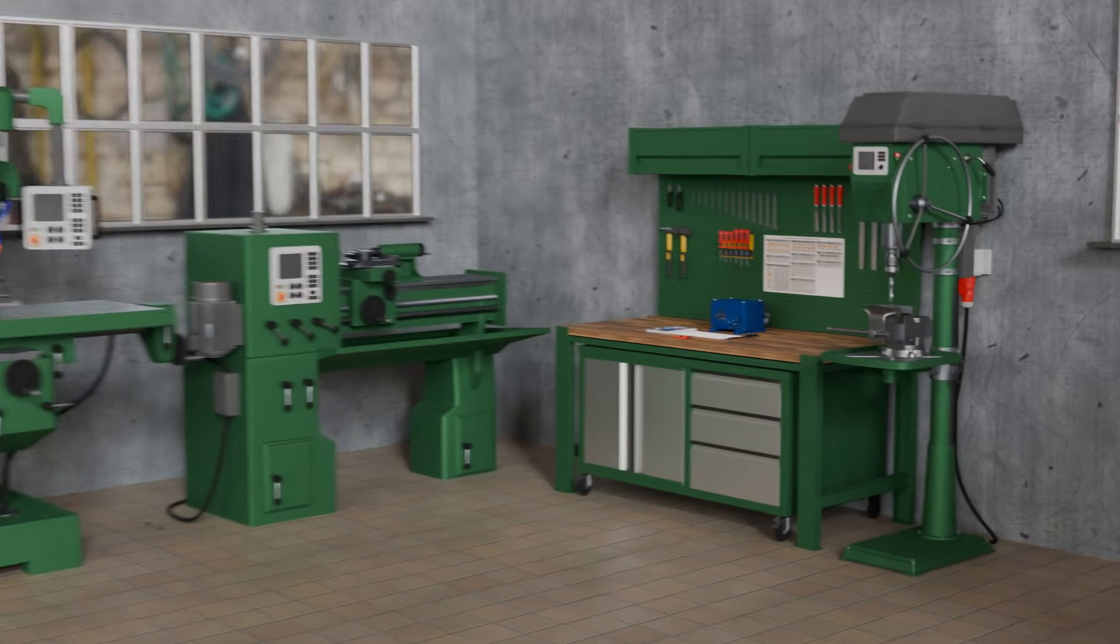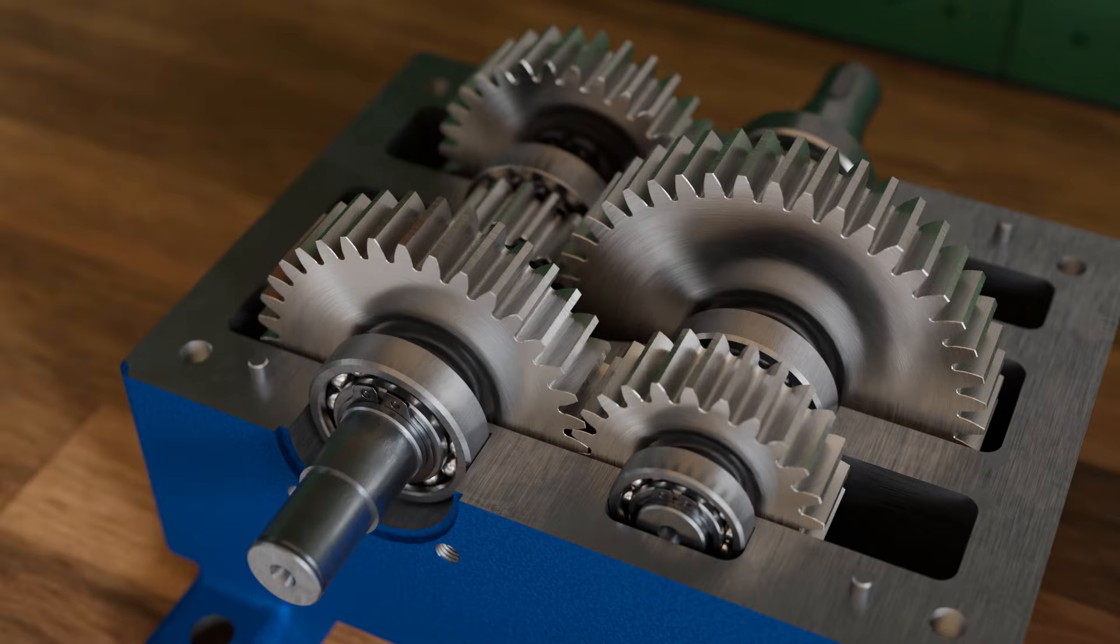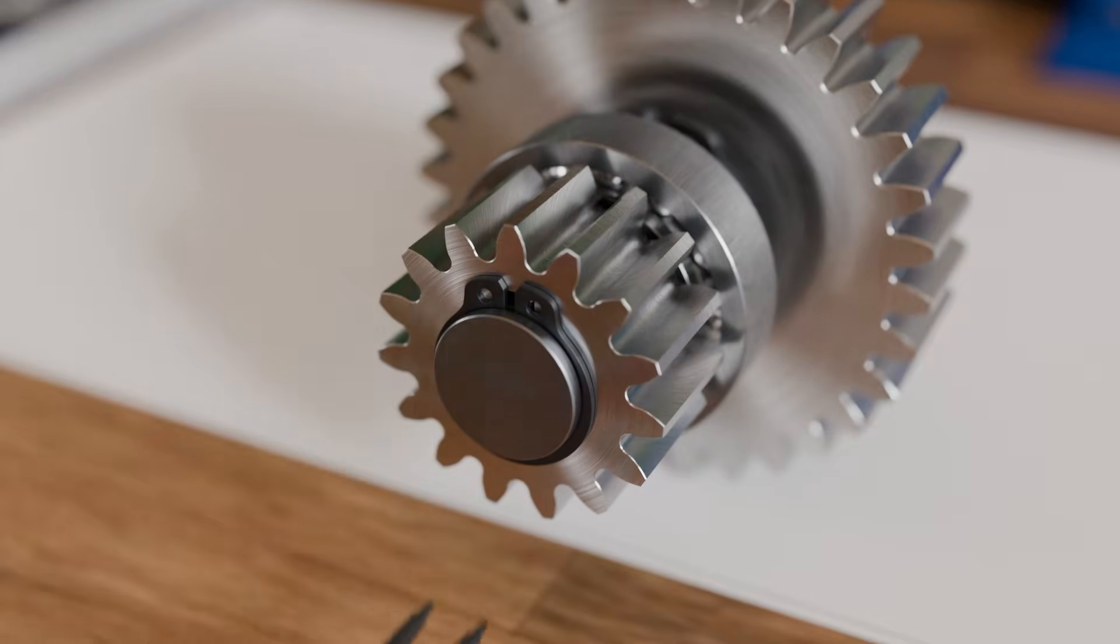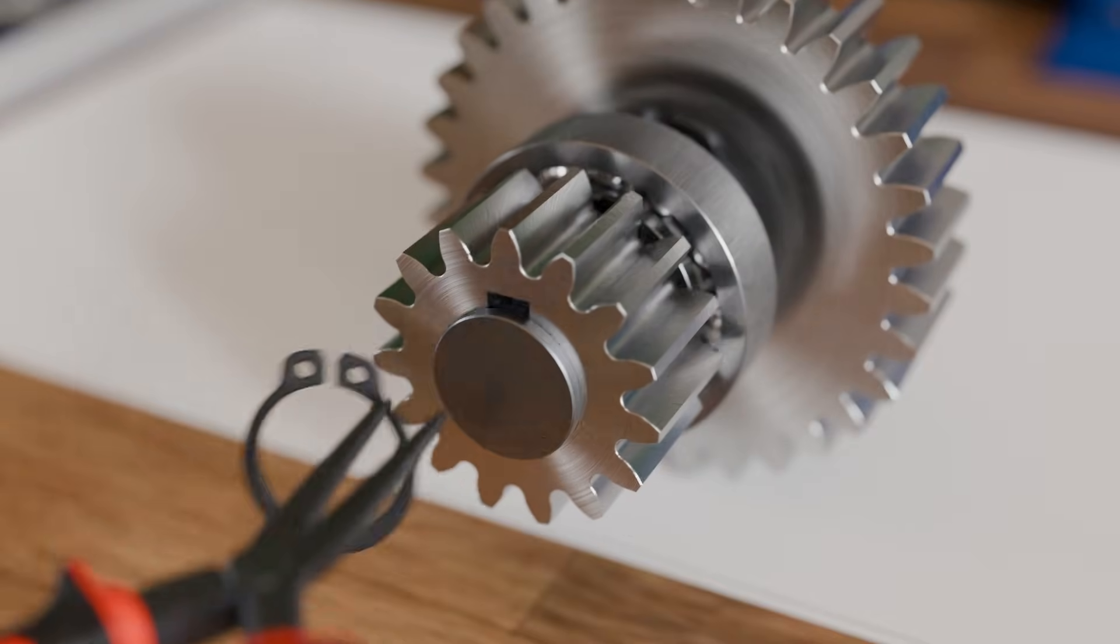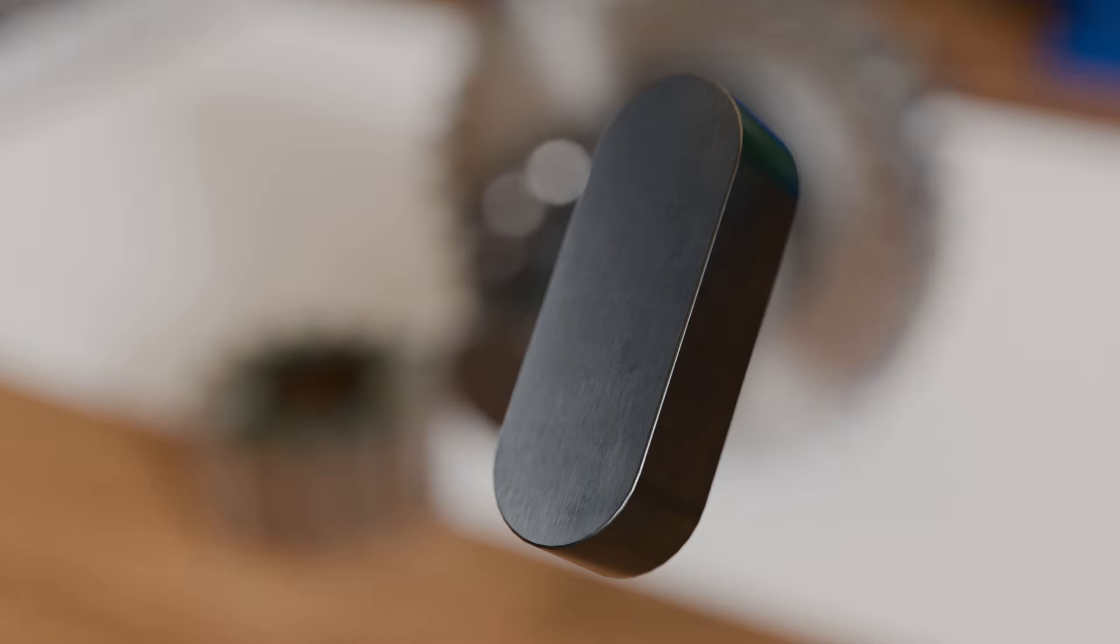When two components are in contact, they generally exert forces on each other. This is the case, for example, with gears whose tooth flanks are in contact and transmit forces. The same applies to a keyed joint, where the torque of the shaft is transferred to the gear through the contact surface of the key.